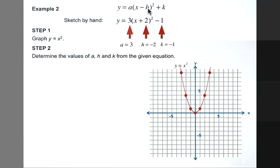Remember, our h's are always the opposite sign of what is shown in the equation. That's why we have a positive 2 here, but we have a negative 2 here.